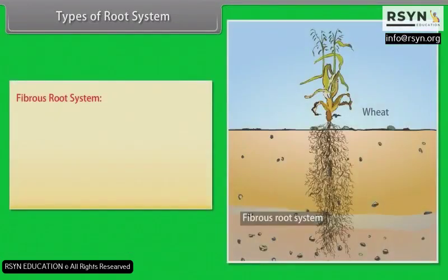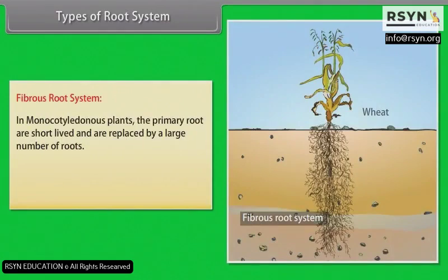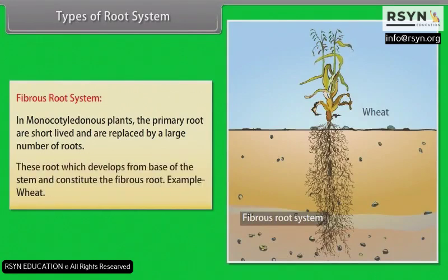Fibrous root system: In monocotyledonous plants, the primary roots are short-lived and are replaced by a large number of roots. These roots, which develop from the base of the stem, constitute the fibrous root. Example: wheat.